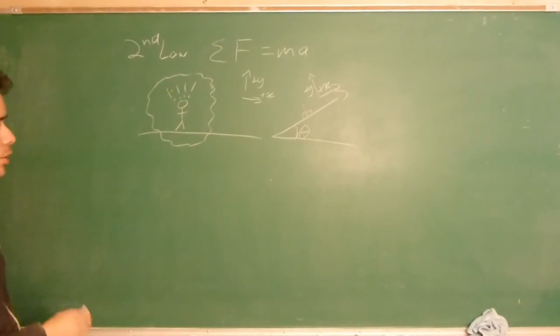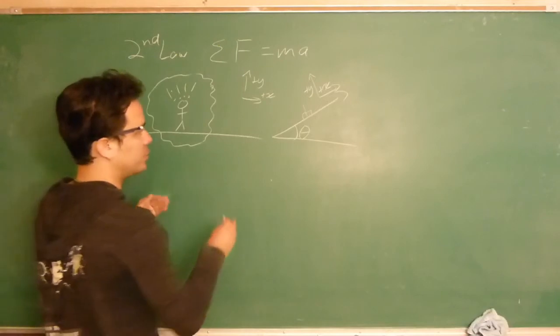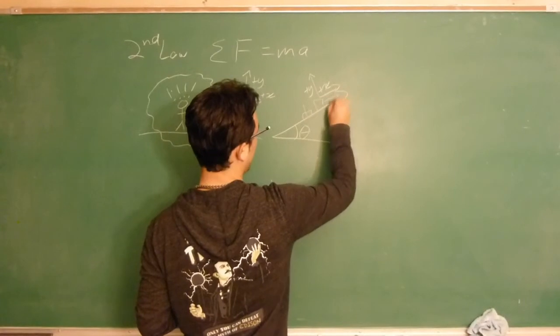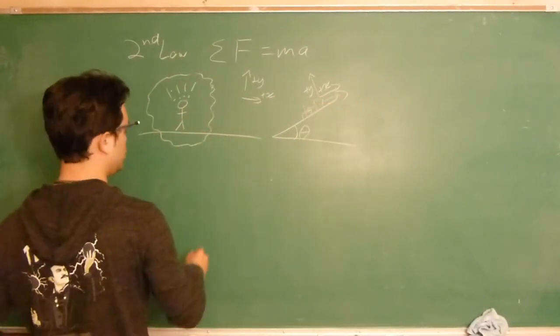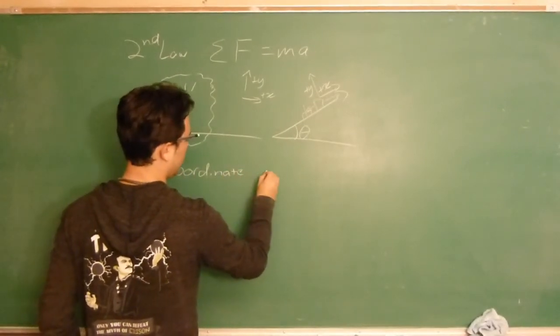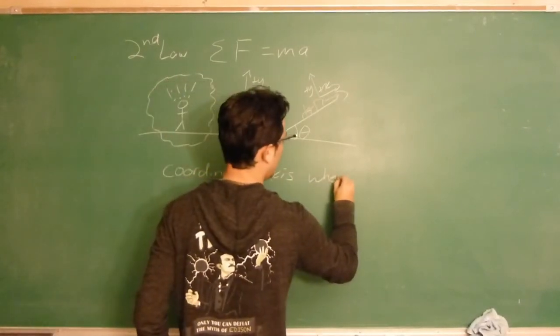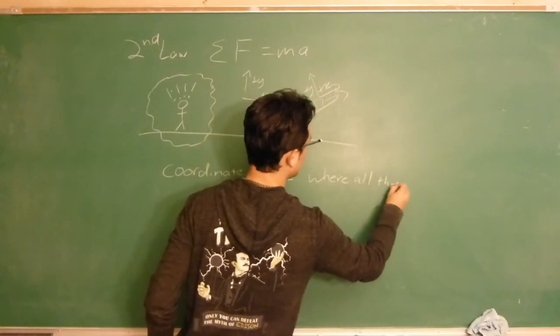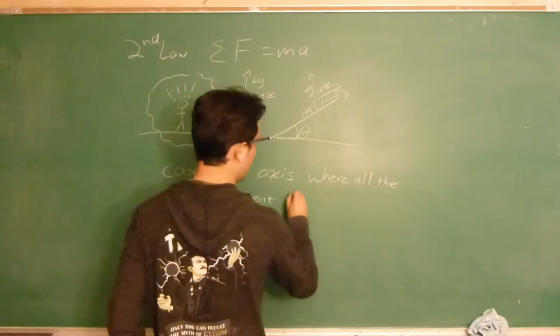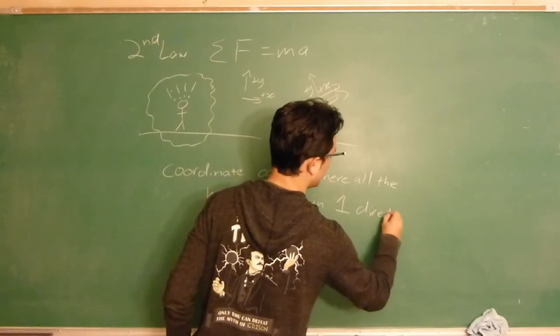One of the best ways, if you don't know what you want to do to try and choose your coordinate axis, think about if there's any type of motion, like for our object on an inclined plane, usually it'll move up or down the plane. What you want to do is set up a coordinate axis where all the movement is in one direction or dimension.